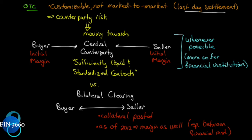That brings up counterparty risk — though not so much anymore, because the OTC market is moving towards a futures-style model, having a central counterparty where the buyer and the seller are now both dealing with a central counterparty, and both post initial margin. This has to happen whenever possible, and more so for financial institutions. The Dodd-Frank Act sets out this term: all sufficiently liquid and standardized contracts must move to a central counterparty. A lot of currency contracts are sufficiently liquid and standardized that they can move to a central counterparty.